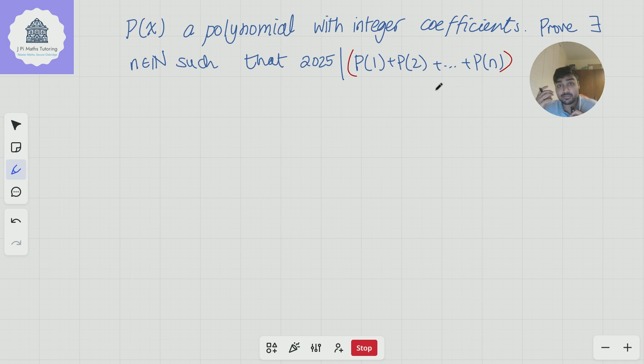So p can be any polynomial and from that we want to show that there is a positive integer n such that 2025 divides this sum. Sorry, not always divides the sum, but there exists an n such that 2025 divides this sum. Okay, cool.